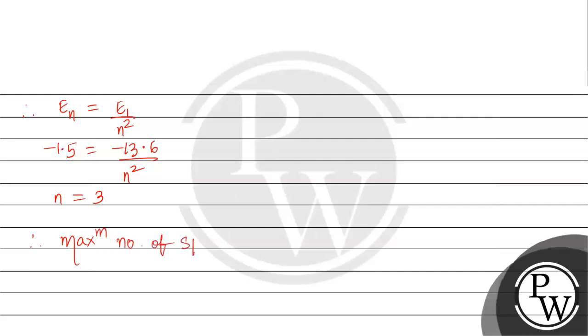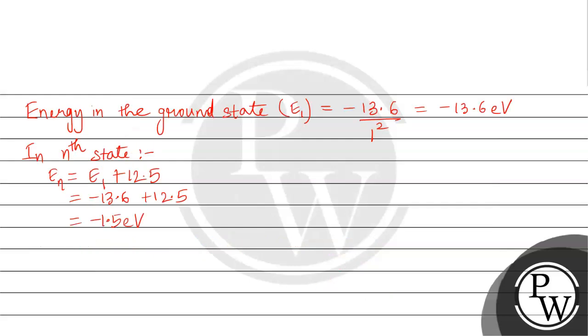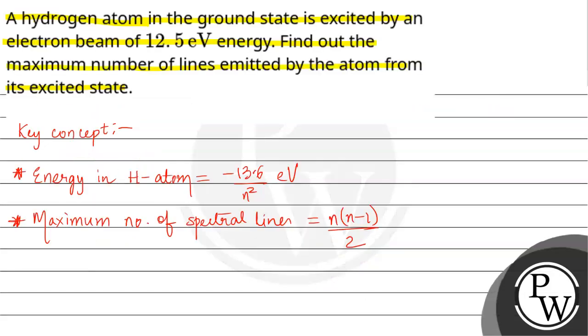The maximum number of spectral lines equals n times n minus 1 by 2. For n equals 3, this gives us 3 times 2 by 2, which equals 3. So the final answer is 3. Hope you understand.